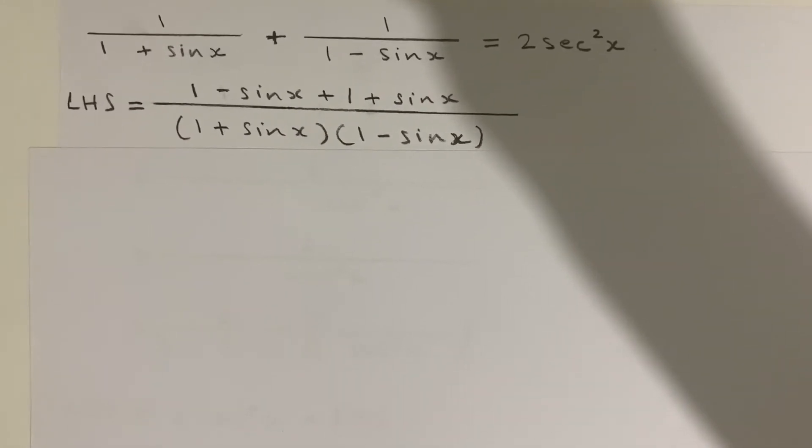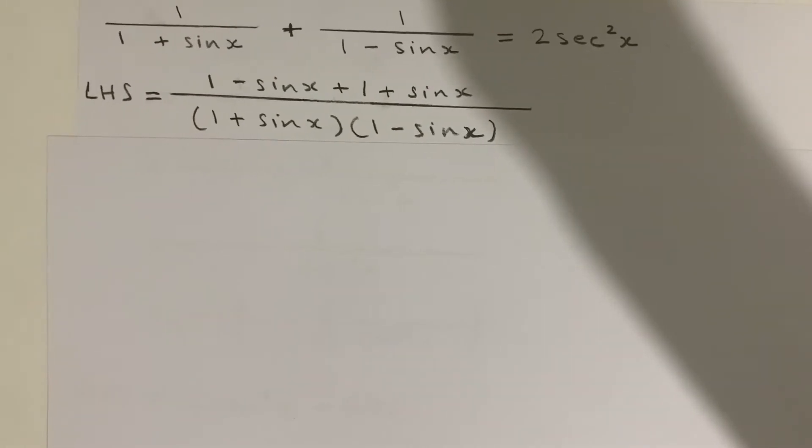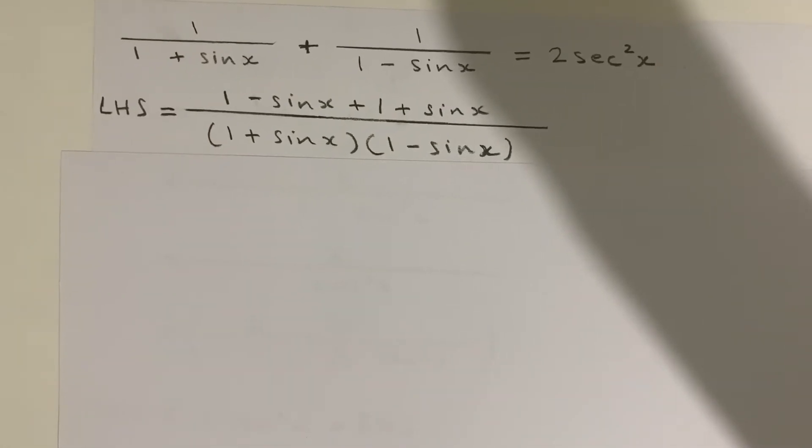By cross multiplying we get that, and on the denominator we get a difference of two squares.